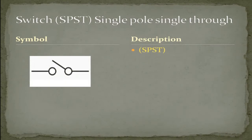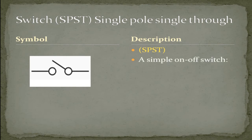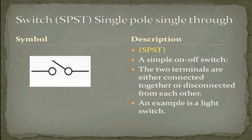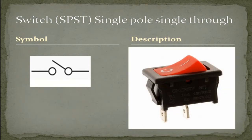A single pole, single throw switch. A simple on-off switch. The two terminals are either connected together or disconnected from each other. An example is a light switch. Here is an example of a rocker single pole, single throw switch. You can tell it just has two terminals on the switch.